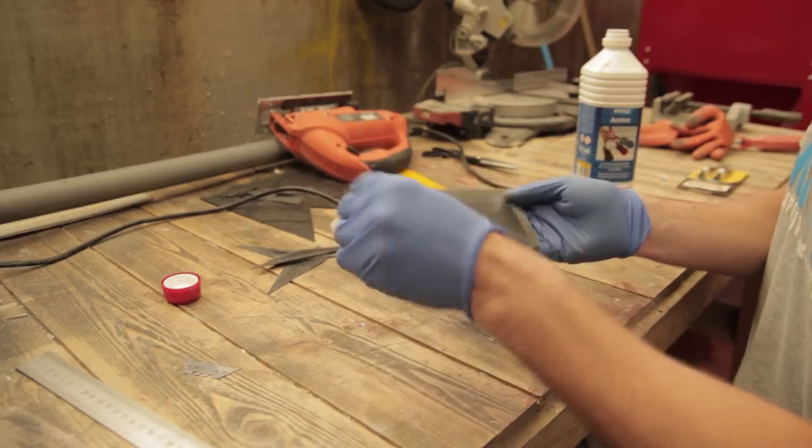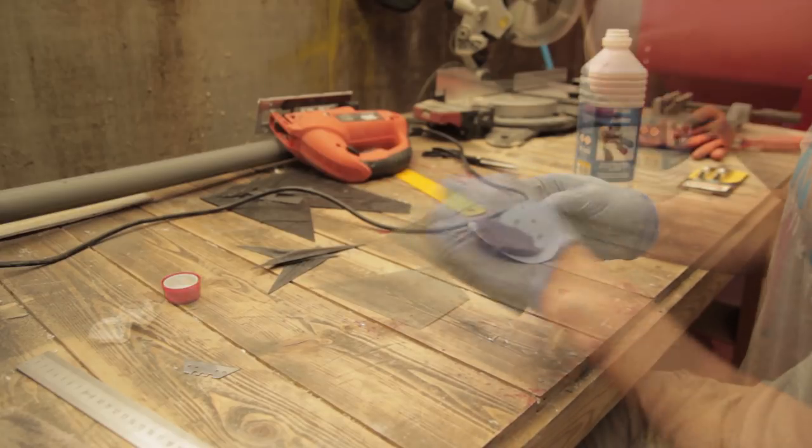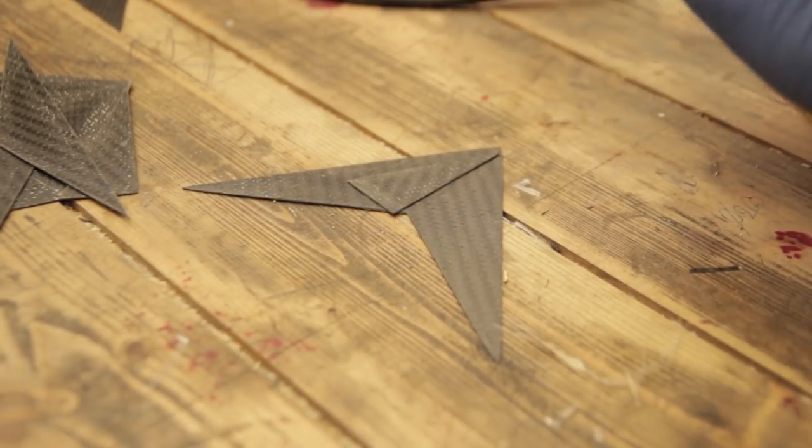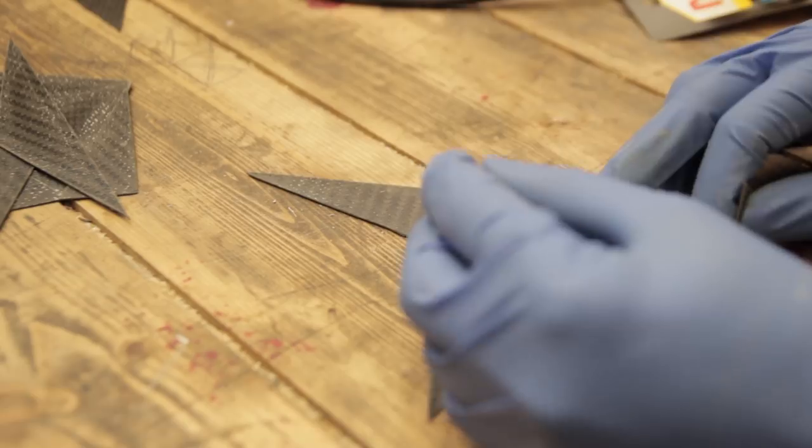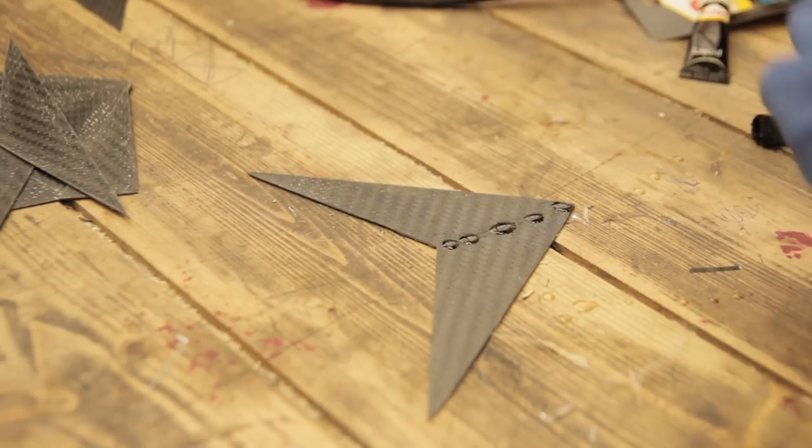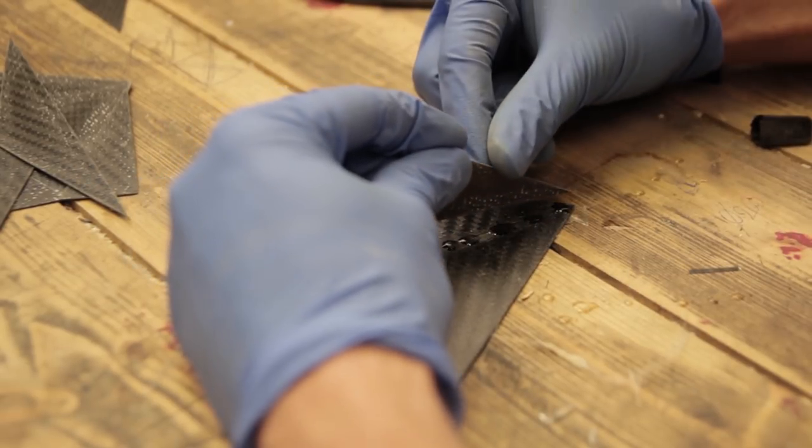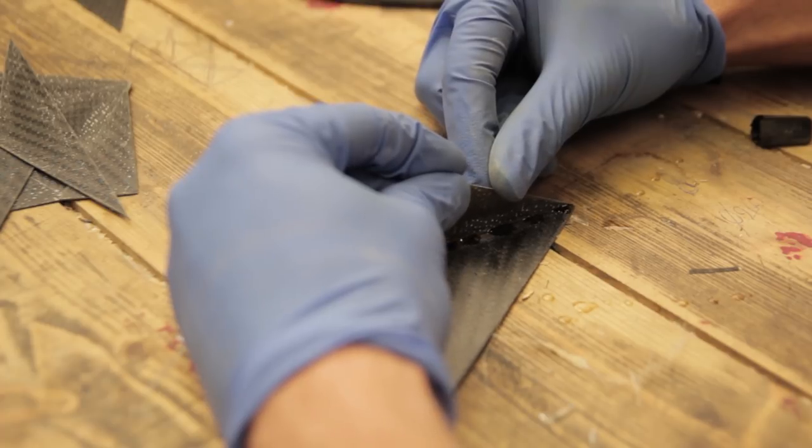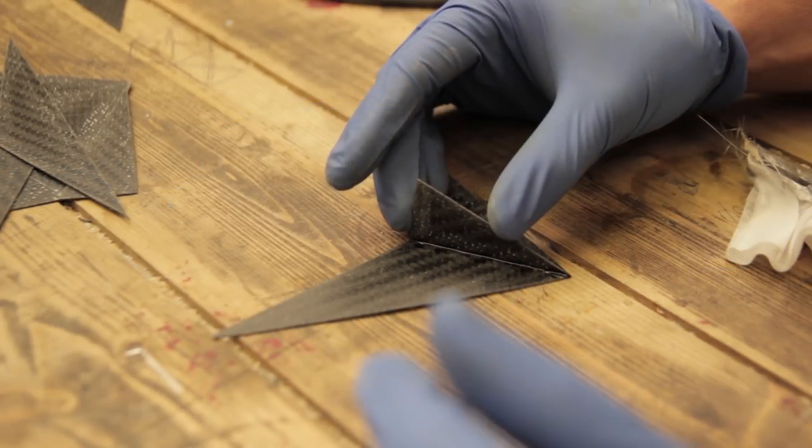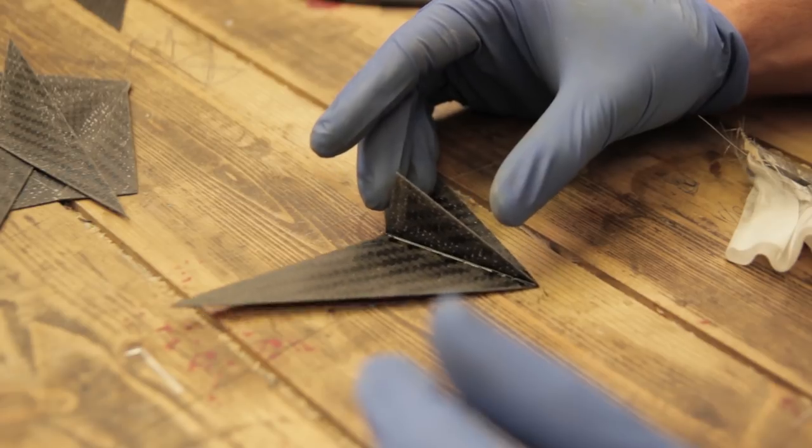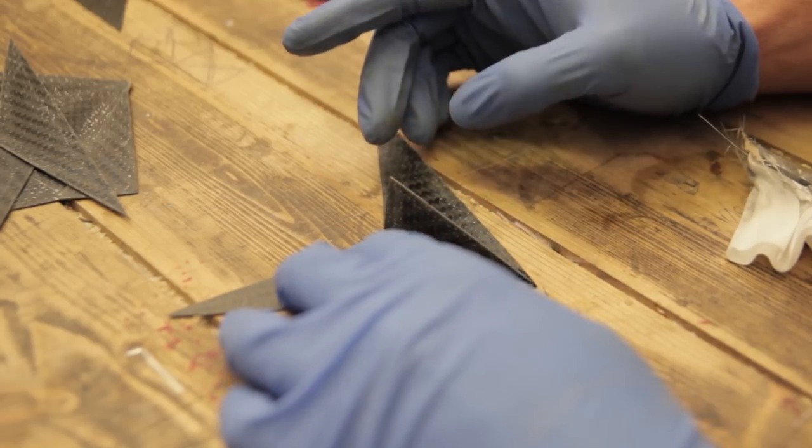So what I did is I just rubbed with some 80 grit sanding paper just to create like a good bond between the super glue and the upstanding bevels coming on top. Then I cleaned it with some acetone to degrease it and then I just add the bevels on top just to create the 3D shape that we are looking for at the end.